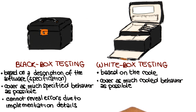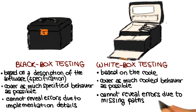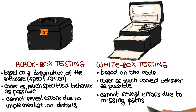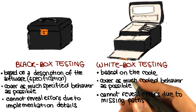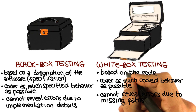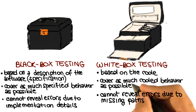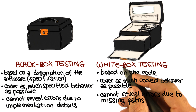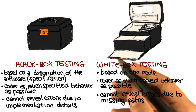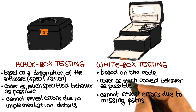And the limitation of white box testing is that, unlike black box testing, it can't reveal errors due to missing paths — where missing paths are parts of a software specification that are not implemented. The reason why it cannot reveal them is that it is focused on the code and not on the specification.